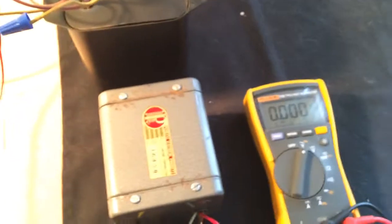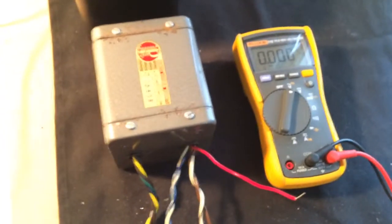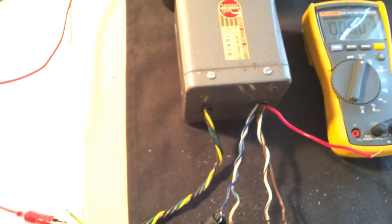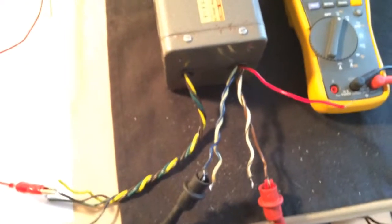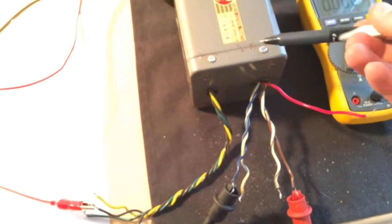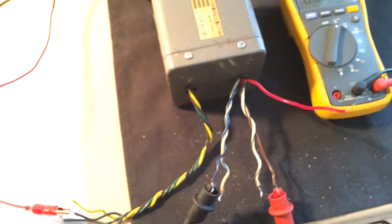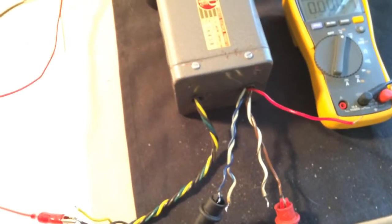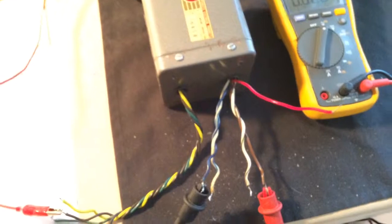I've also measured continuity between the primary and the secondary windings and everything's good there. I've also taken the lead of each of them to the chassis and I had no continuity. So I believe I don't have any shorts to the core or the case or anything like that.